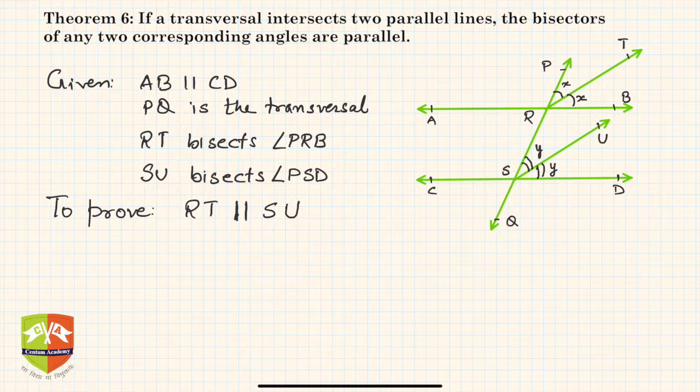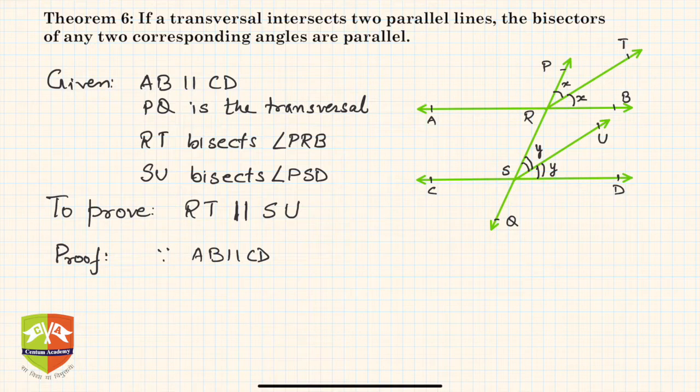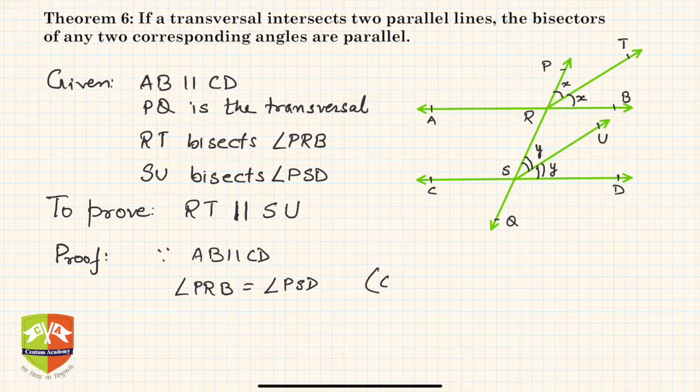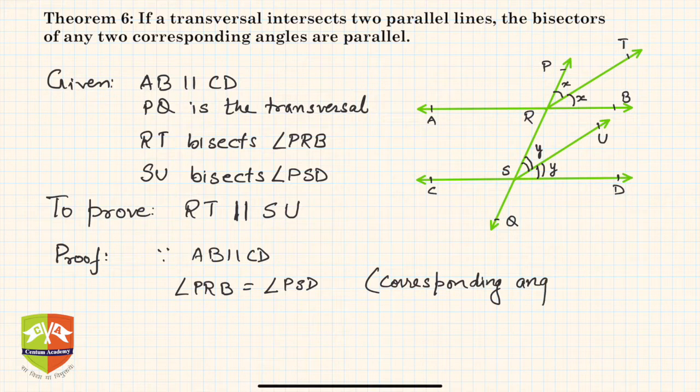Let's begin the proof. We know that AB is parallel to CD. Angle PRB equals angle PSD - they are corresponding angles, isn't it?